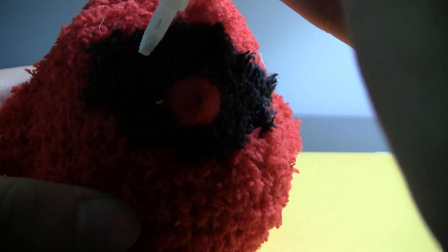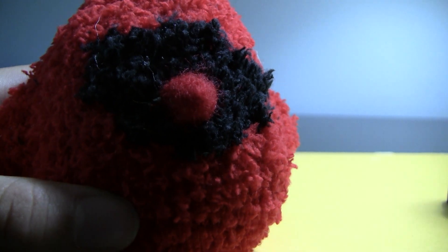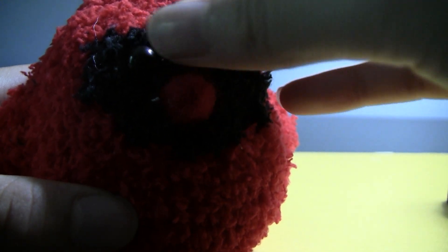Now you can sew it onto the center of the bottom half of the face. Next, I'm going to superglue on some flat backed eyes. You can also sew on beads or tie knots with black embroidery thread.